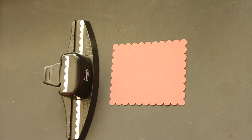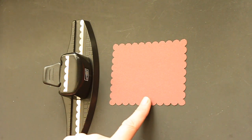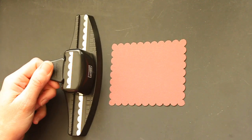Hi, this is Beate from SplickoStampers. In this video, I'll show you how to create a scallop square or rectangle with your scallop edge punch.